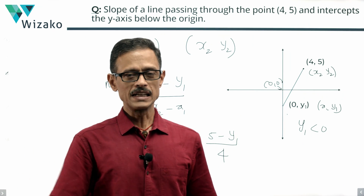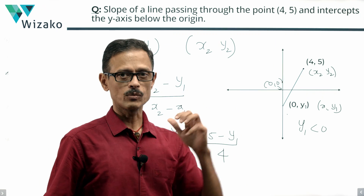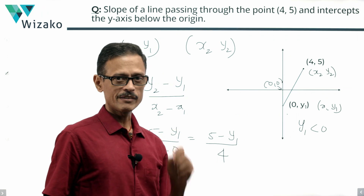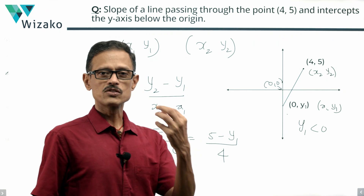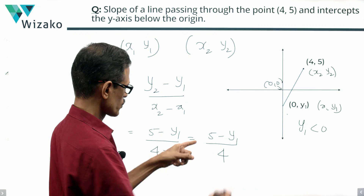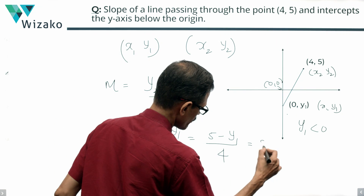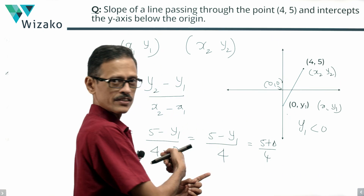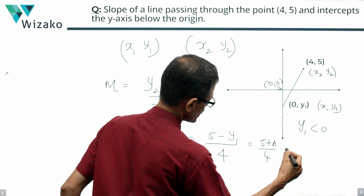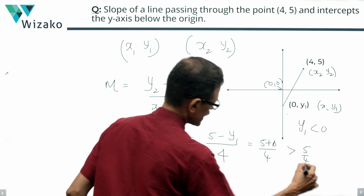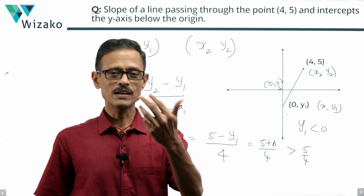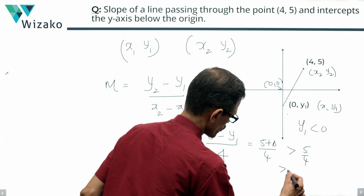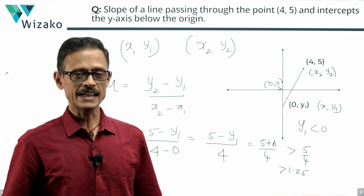From this point, you can reason it out in two ways. Since y1 is a negative number, 5 minus a negative number gives a value greater than 5. So the numerator is 5 plus some positive delta, meaning it's greater than 5. Dividing by 4, we get a value greater than 5/4, which means the slope of our line is greater than 1.25.